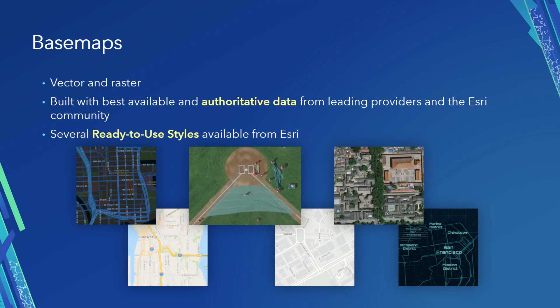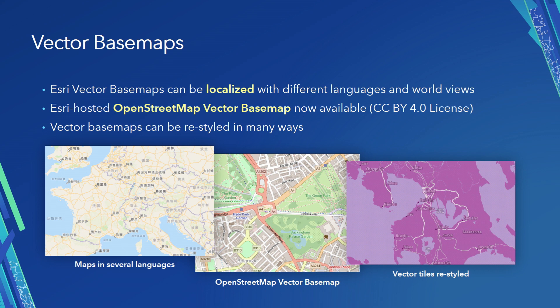One of the first things you will do is get data into your app, and you'll probably start with a base map. We've got a number of base maps, both vector and raster. We build these base maps in-house from authoritative content, from commercial providers, as well as from the Esri user community, and we think we've got the best collection of base maps available on the planet. We have several styles ready to use in your applications. We localize these in a number of languages, so no matter which country you're working in around the world, you'll be able to find the content for your application.